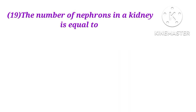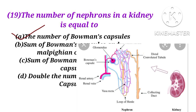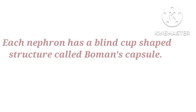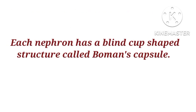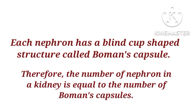Number 19. The number of nephrons in a kidney is equal to the number of Bowman's capsules. The correct answer is A. The number of Bowman's capsules equals the number of nephrons in the kidney. Each nephron has a blind, cup-shaped structure called a Bowman's capsule. Therefore, the number of nephrons in a kidney equals the number of Bowman's capsules.